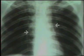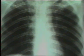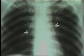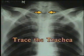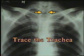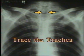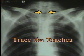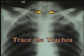Then study the hila, represented by the shadows of the hilar vessels. The left hilum is normally at a slightly higher level than the right. Lastly, identify the course of the trachea up to the carina for any deviation. This completes the inspection of the lung fields.